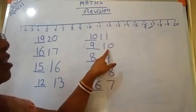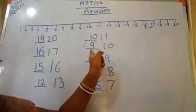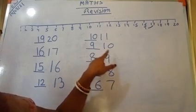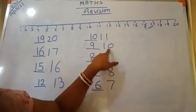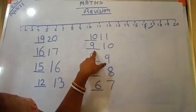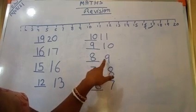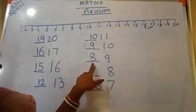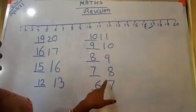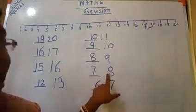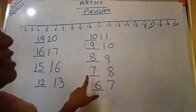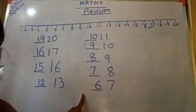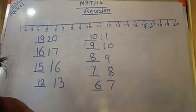Here it is 10. Before number will be what? 9. The before number of 10 is 9. Here it is 9 — 9's before number will be 8. Here it is 8 — 8's before number will be 7. Here it is 7, and 7's before number will be 6.